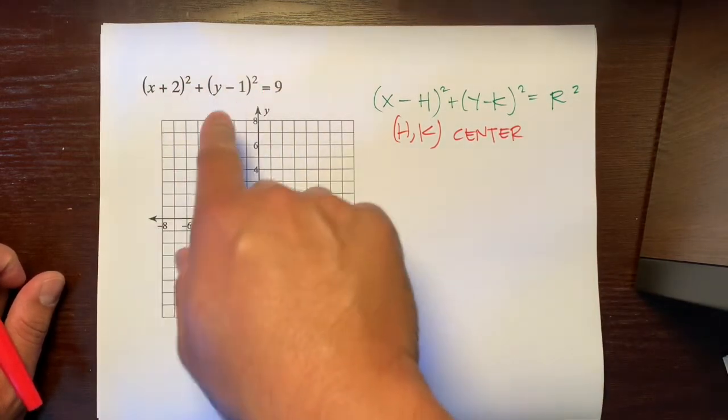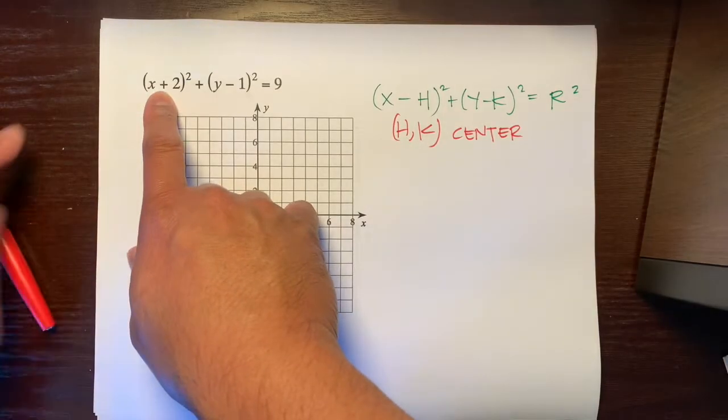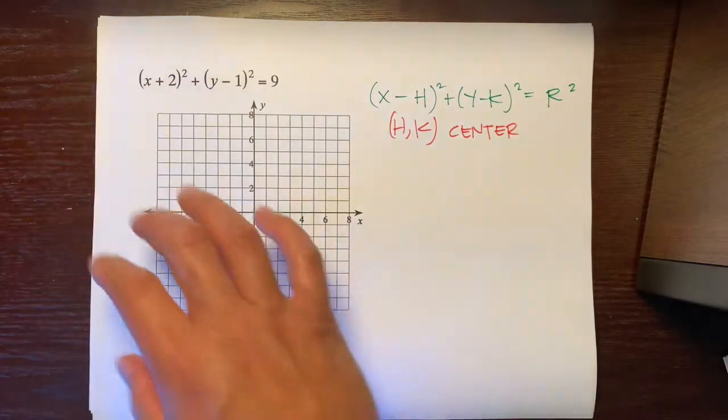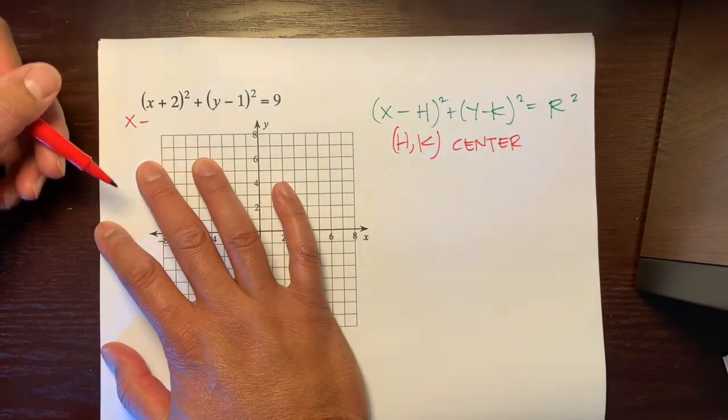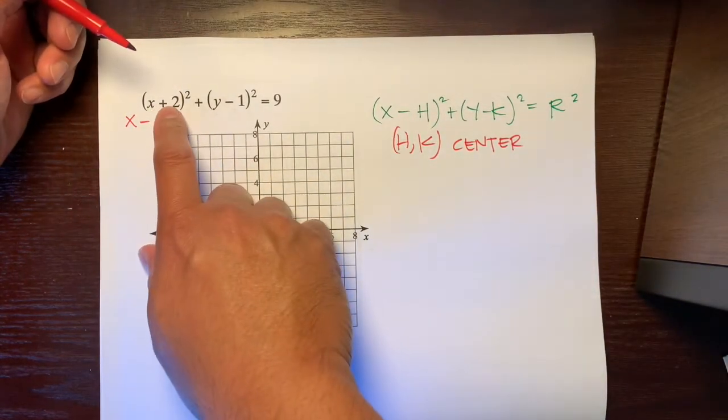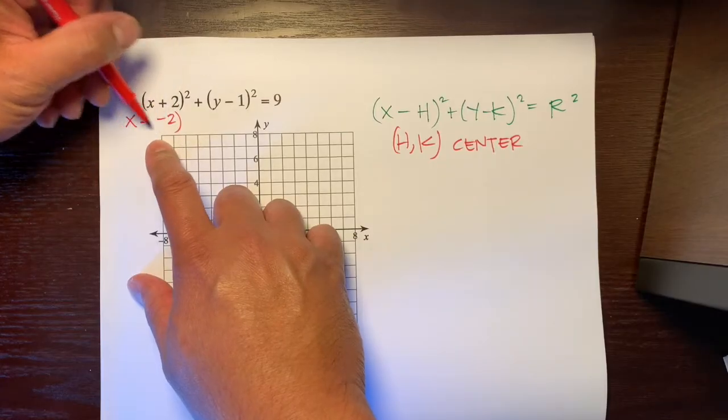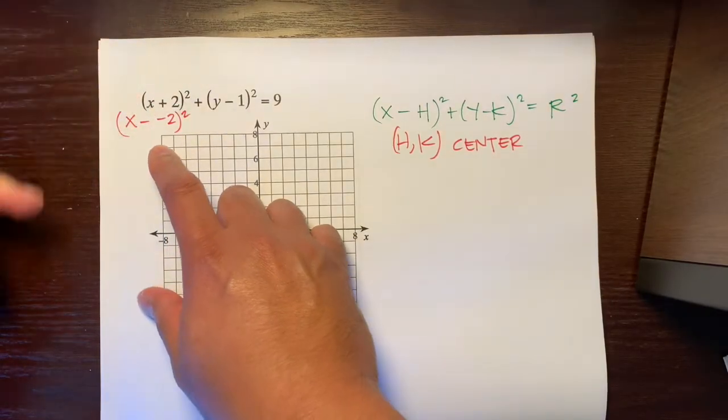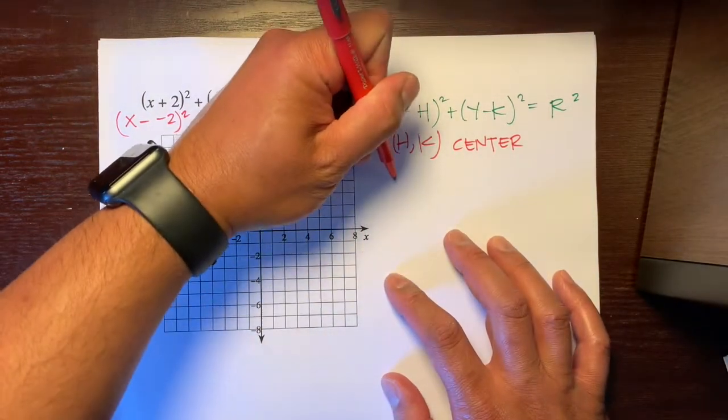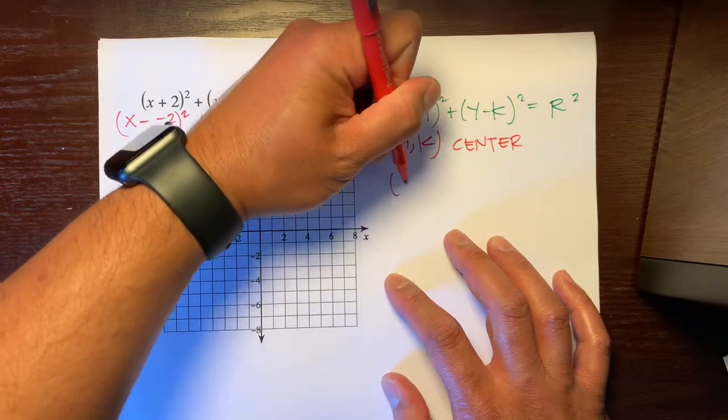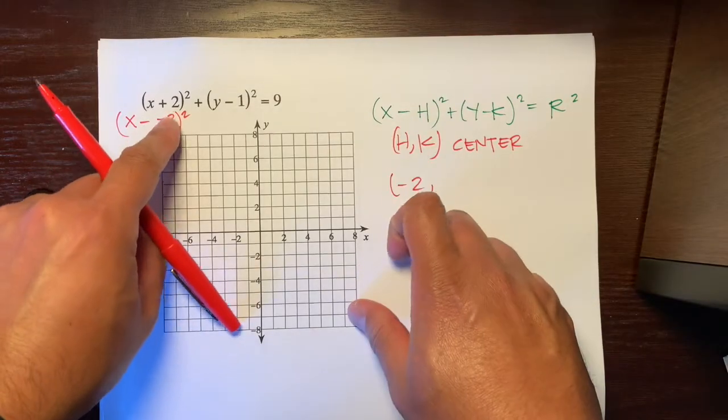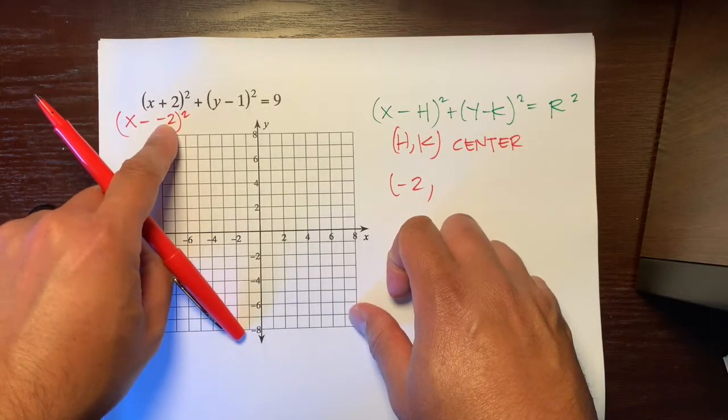If we plug this into the formula, here's the first thing to notice. This is a plus, but the formula is a negative. So what we're going to do is write it as X minus, because the formula is a minus right there. To get that plus 2, we're going to write negative 2 squared. This is going to help us, because 2 negatives make a positive. So actually, our H is negative 2, because the formula is X minus, and then the 2 negatives make a positive.